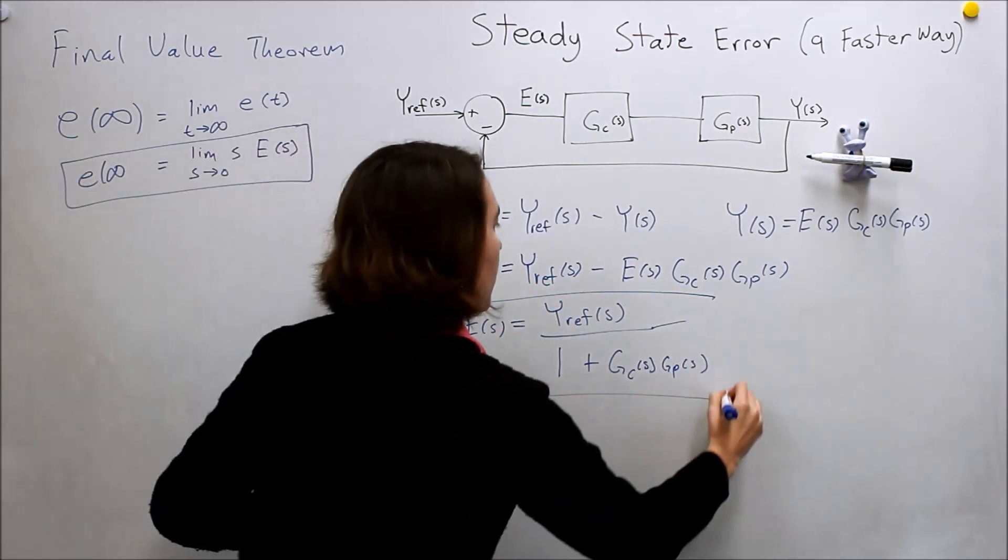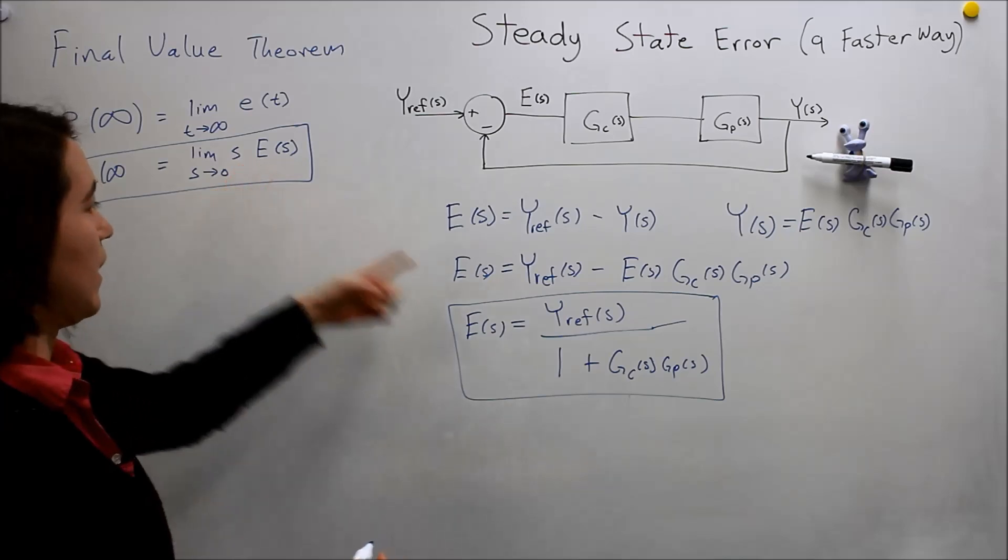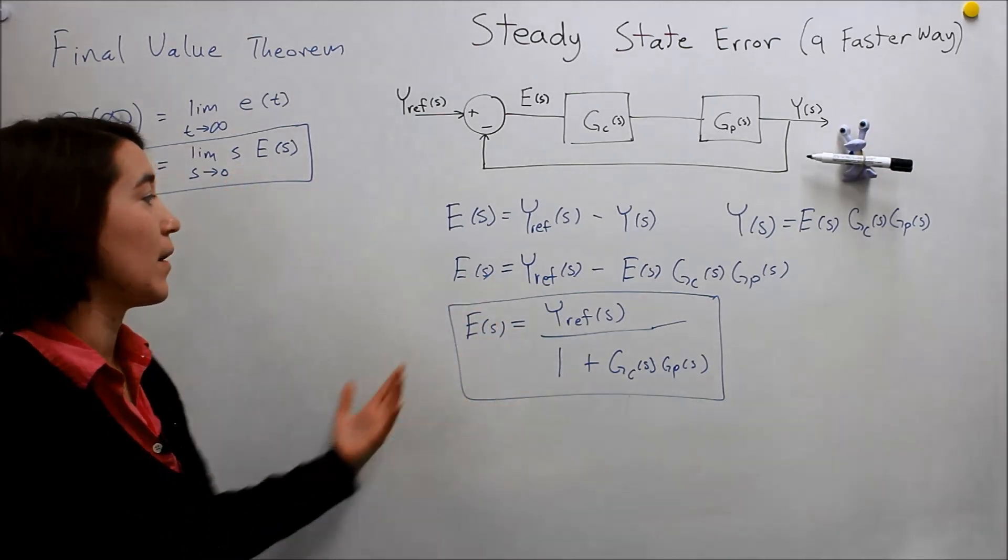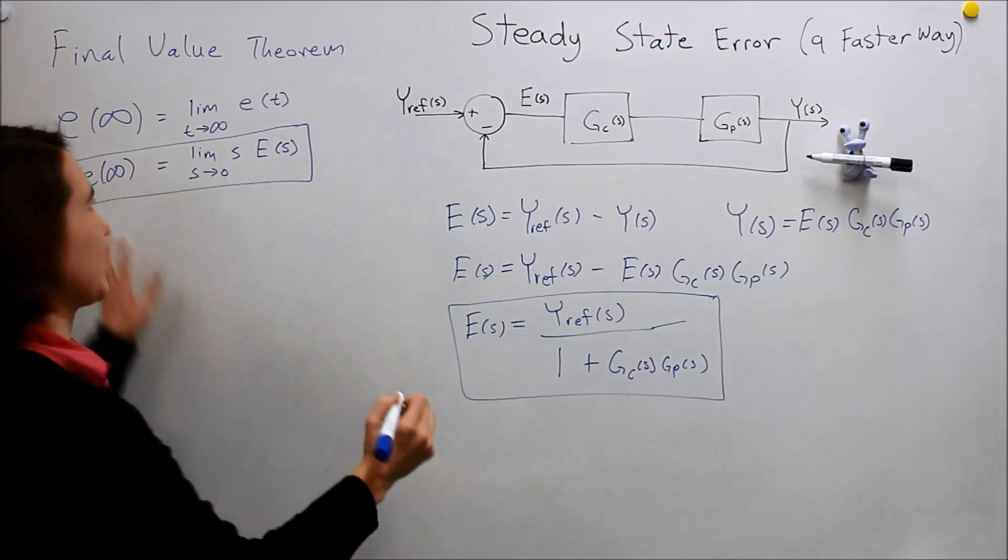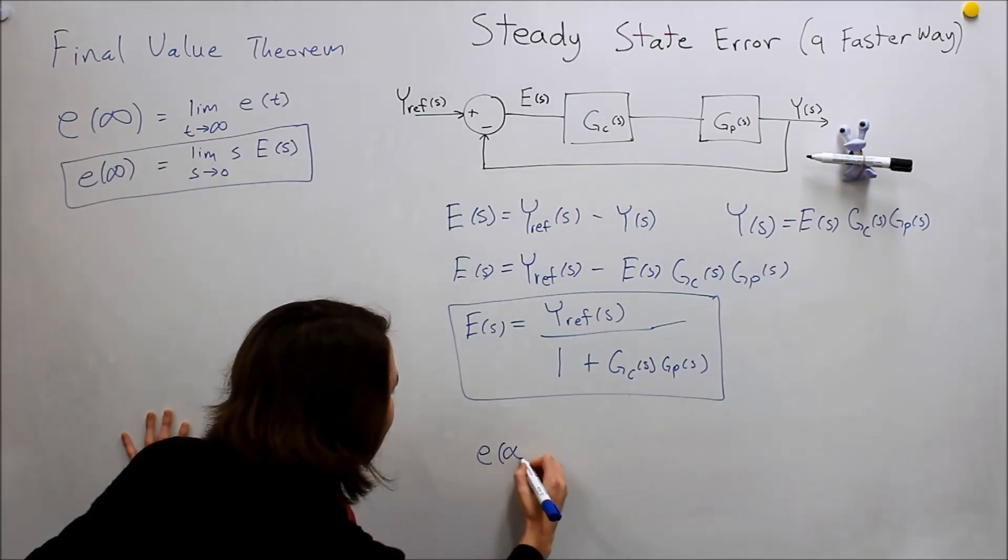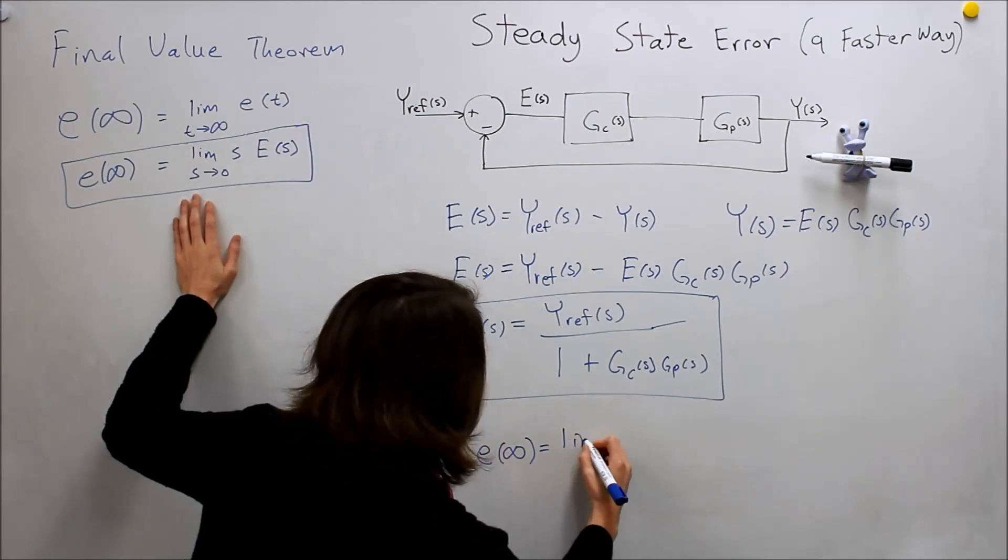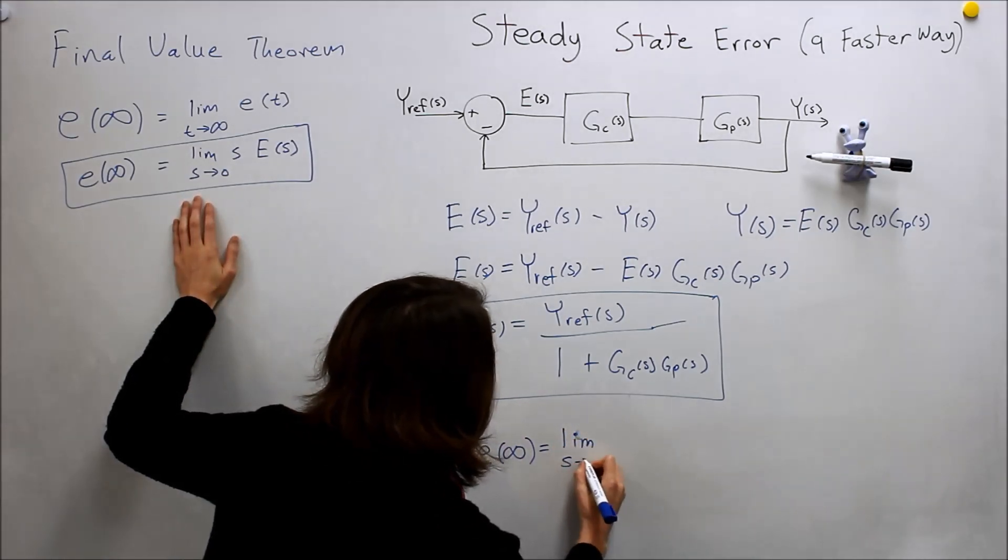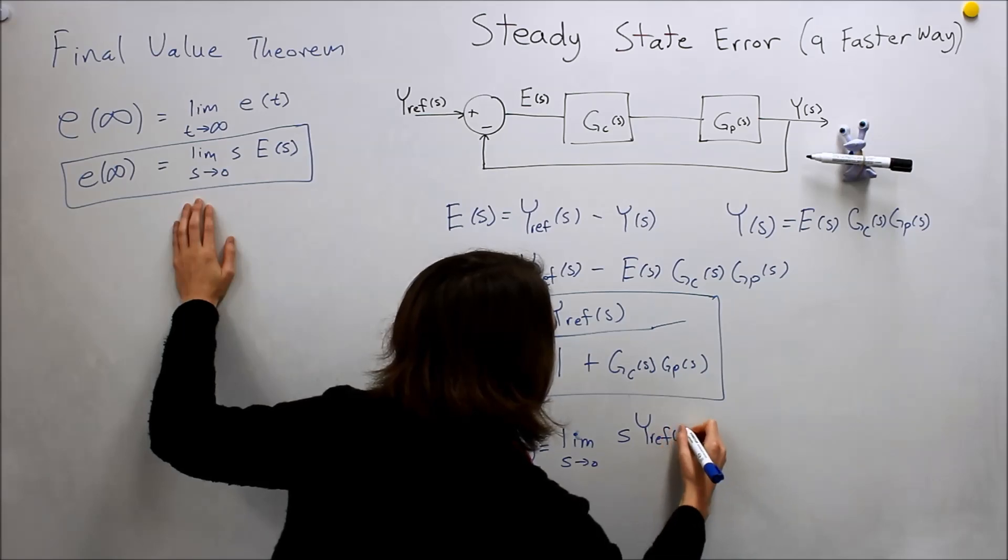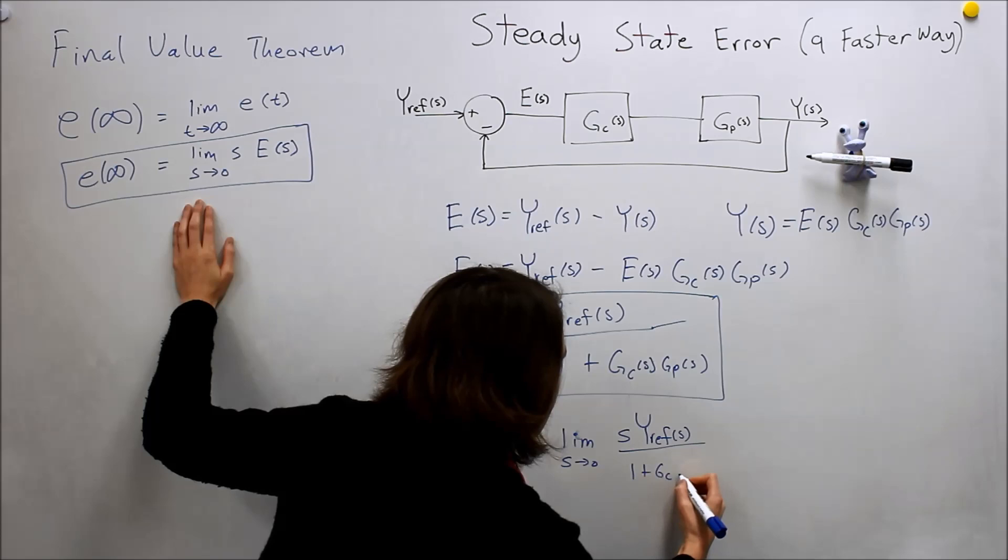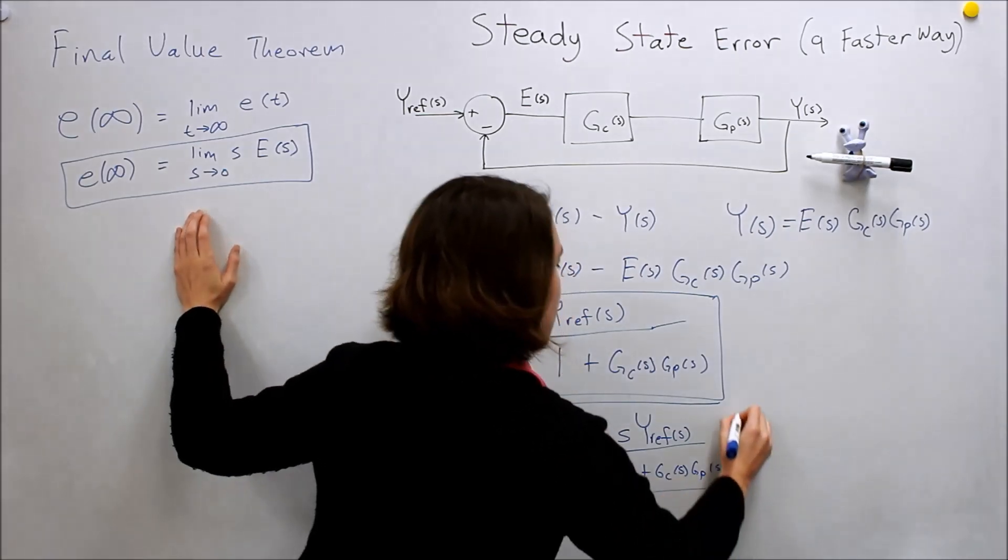So here's one expression. If we know our gc and gp values, we can plug it into here, and then all we have to do is multiply that expression by s, and take the limit as s goes to zero, and we will find our value. So I'll write that right here. Our value of e as time goes to infinity, so the steady state, is equal to the limit as s goes to zero of s times this thing. So s, y ref, one plus gc of s, gp of s. So this would be one of our steady state values.